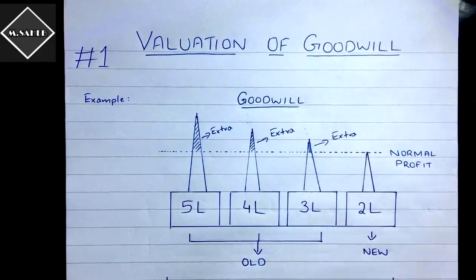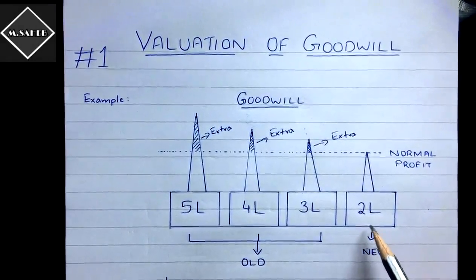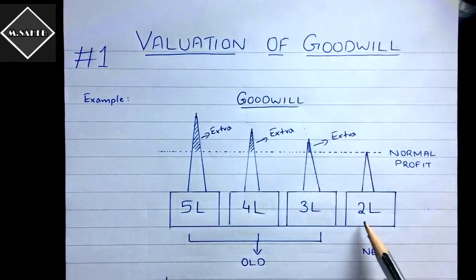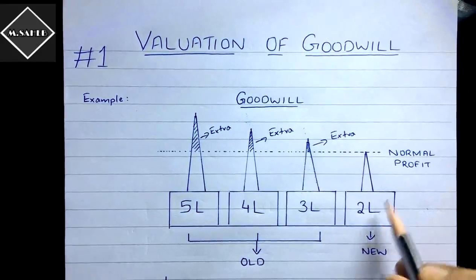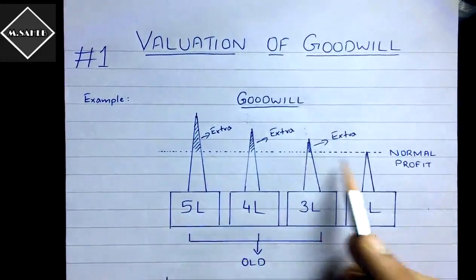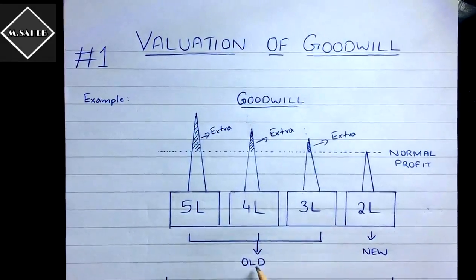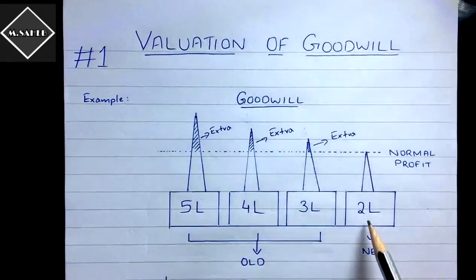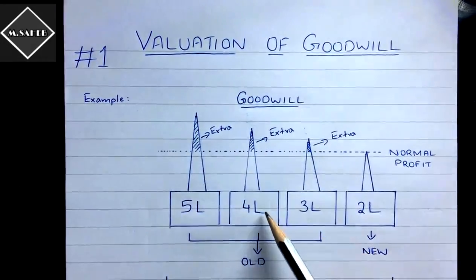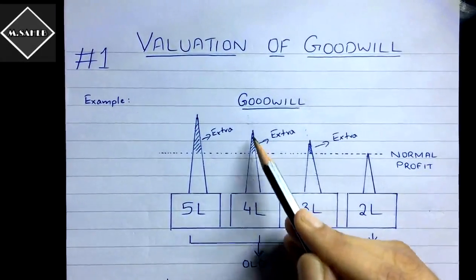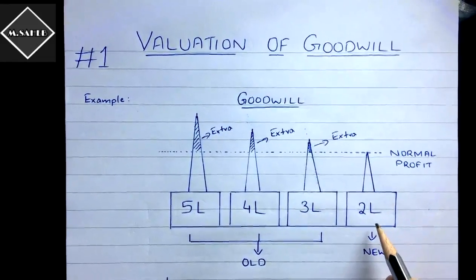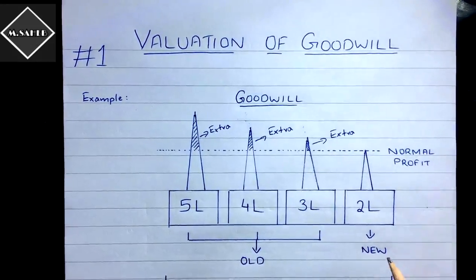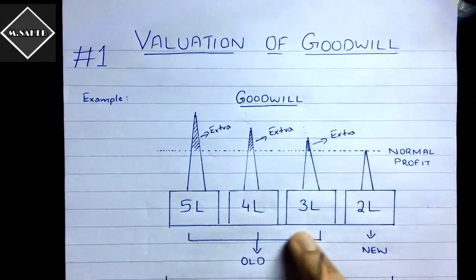The profit made by the new shop is called normal profit. If we draw a cut-off line at two lakh, we can see that the three old shops have earned extra profits over this normal profit. The first shop earned three lakh extra, the second shop also earned extra profit, and the third shop earned one lakh extra over the normal profit. So all three old shops have made extra profits compared to the new business.